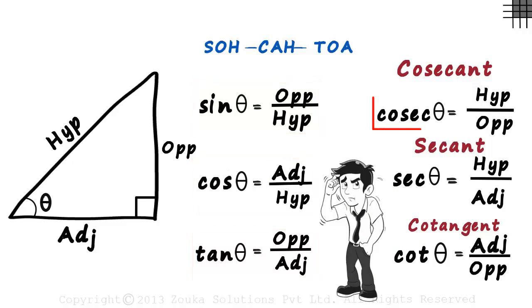So remember, cosec is reciprocal of sine, sec is reciprocal of cos, and cot is reciprocal of tan.